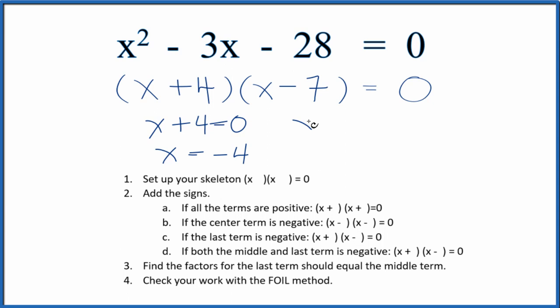Over here, we could say x minus 7 equals 0. And then we would end up with x equals 7. If you put negative 4 in for x and you did the math, all of this would equal 0.